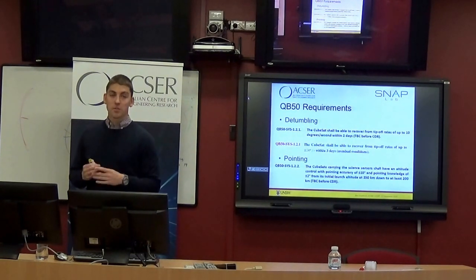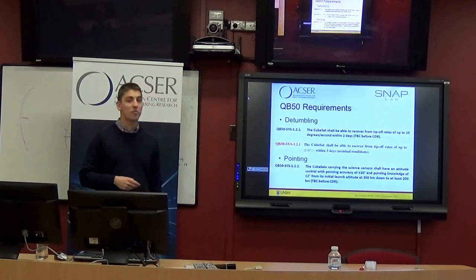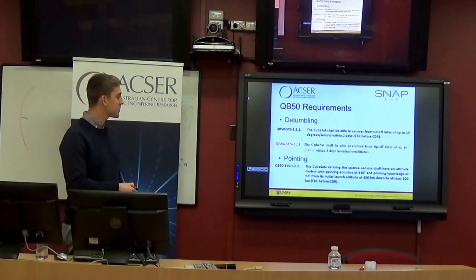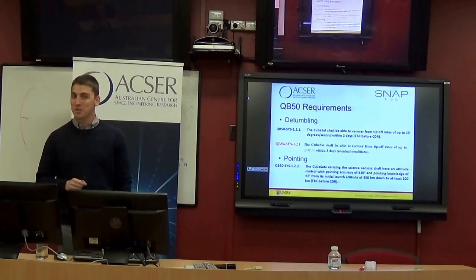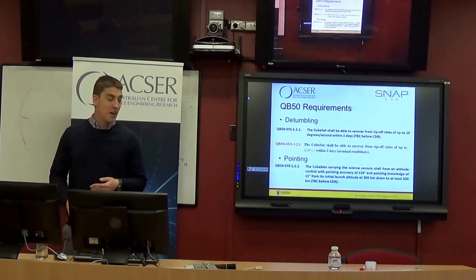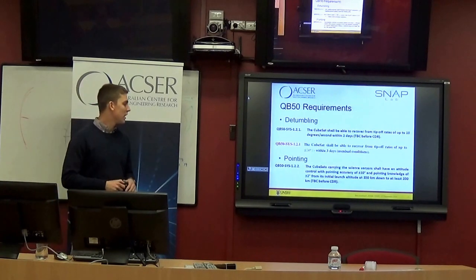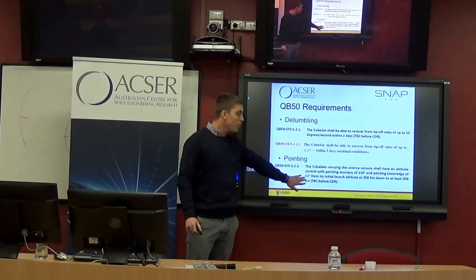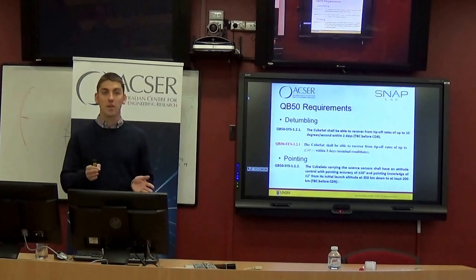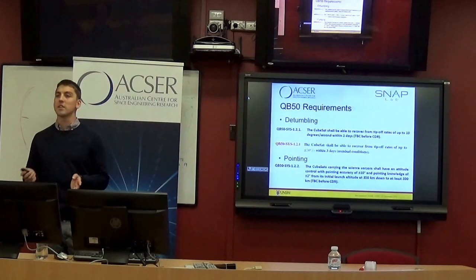For detumbling, these are the requirements given to us by VKI. Initially we were told we only needed to detumble from rates of ±10 degrees per second. Late last year this was upped to ±50 degrees per second — quite late, but luckily we had already met that requirement, which came from their precursor flight experience. For the INMS, pointing knowledge is ±2 degrees; they need to control attitude within ±10 degrees.